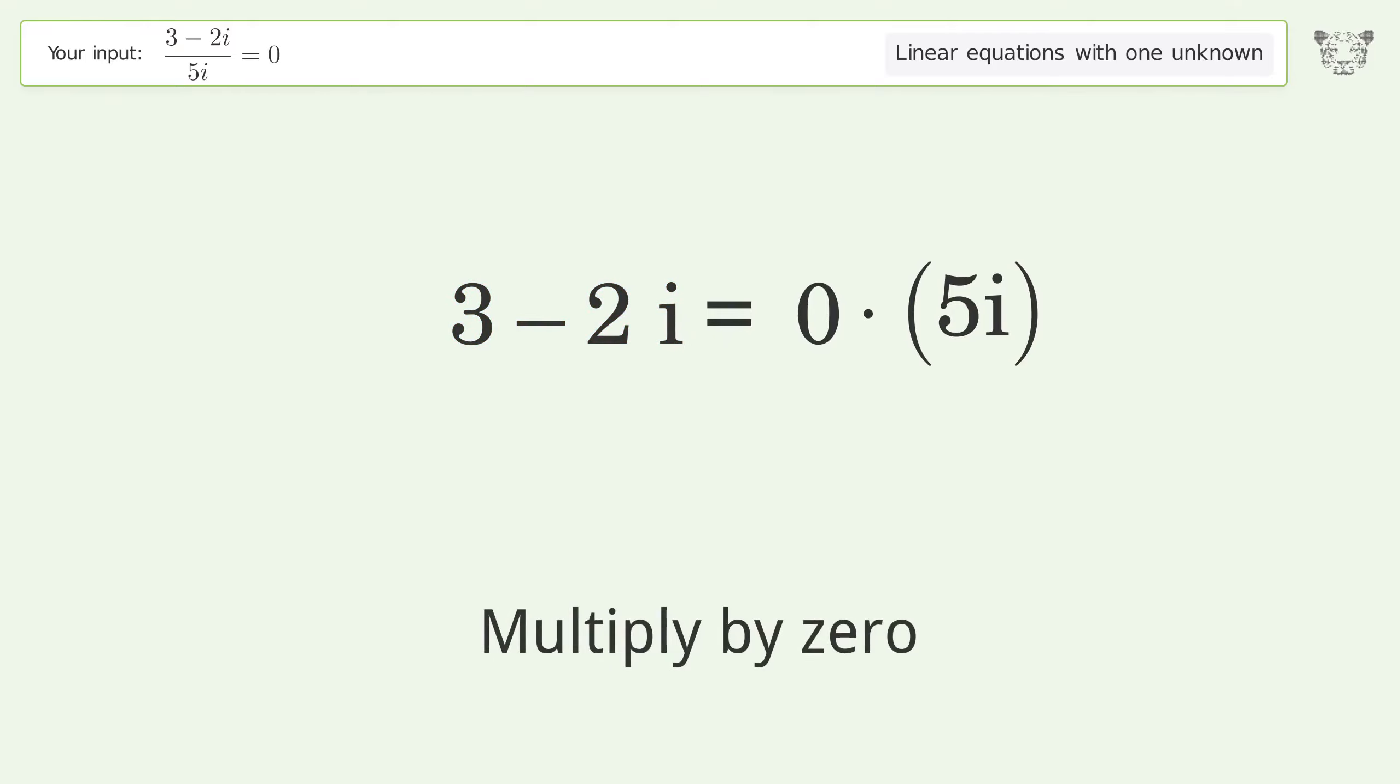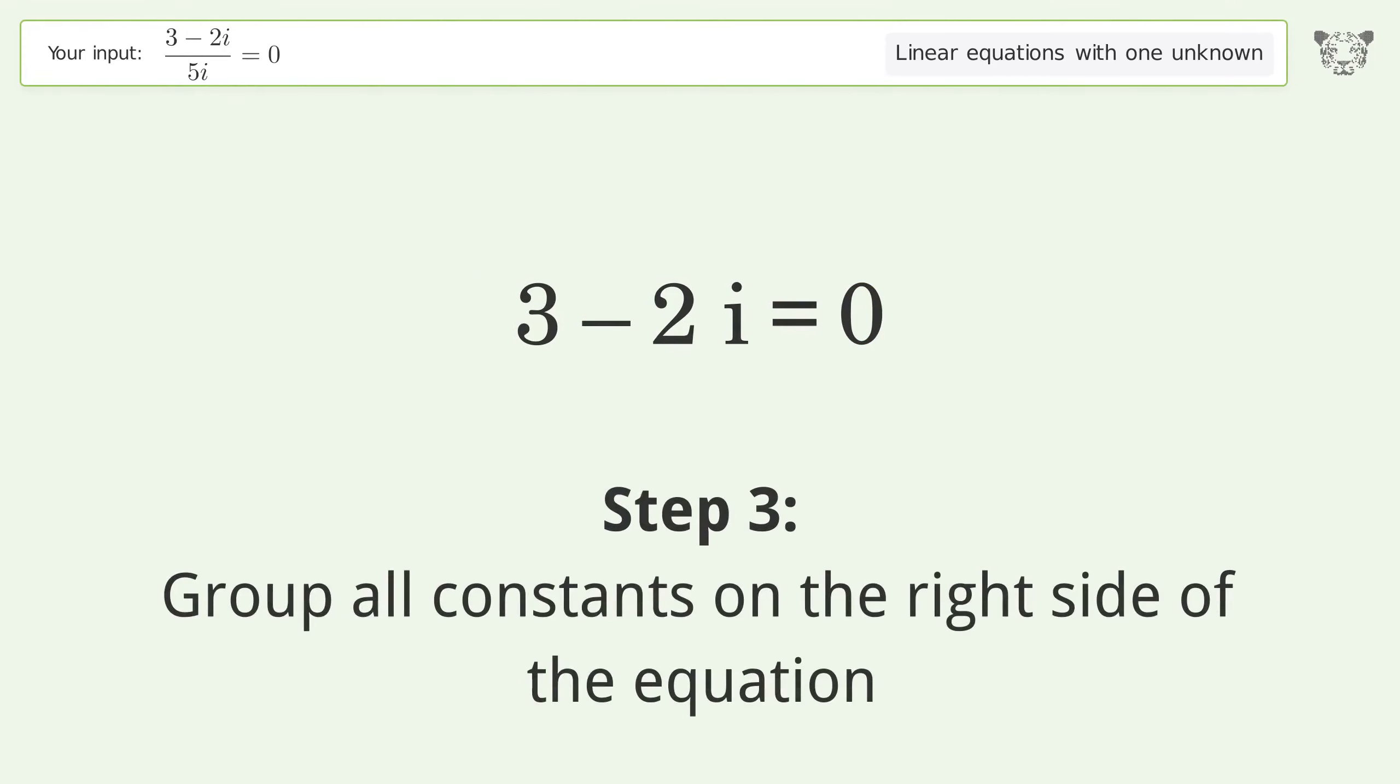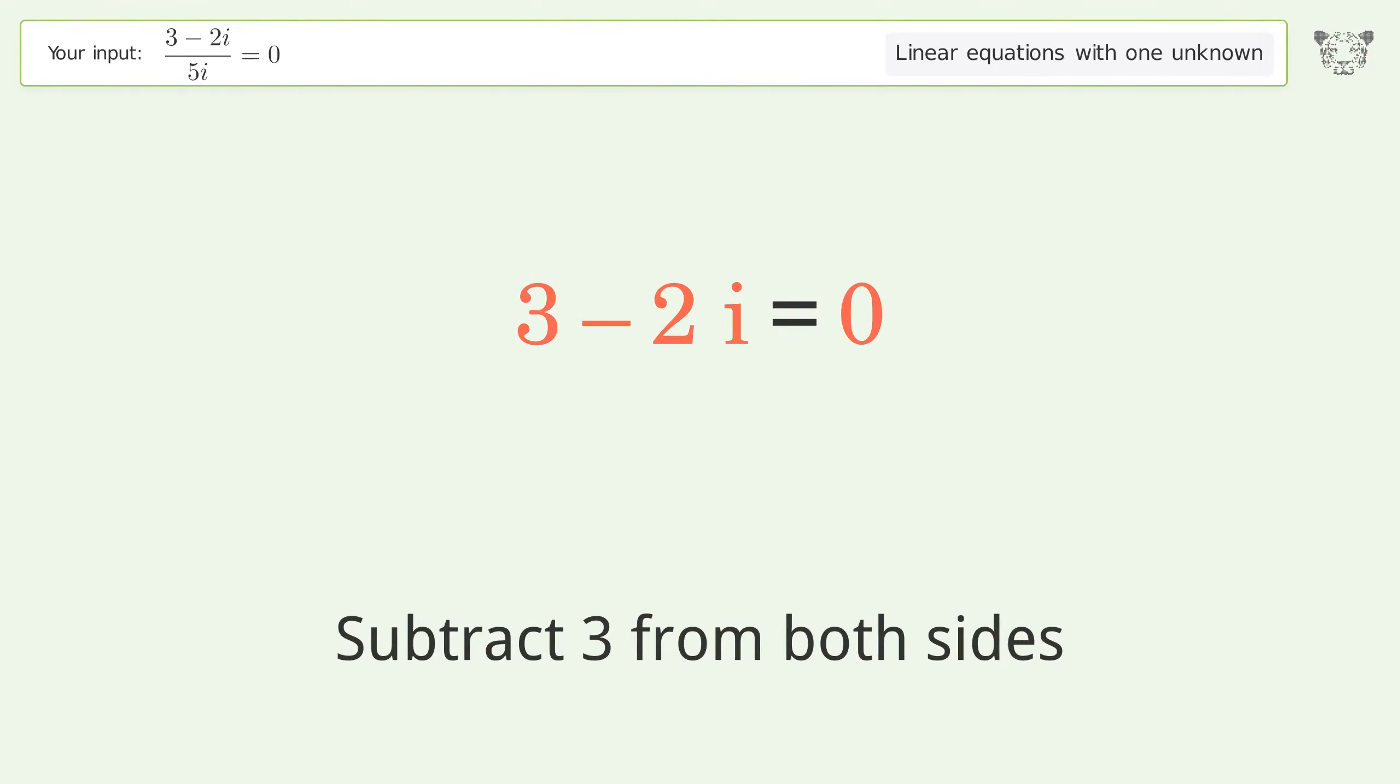Multiply by 0. Group all constants on the right side of the equation. Subtract 3 from both sides.